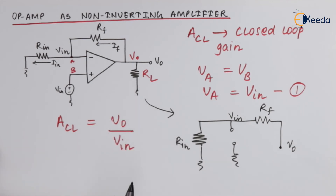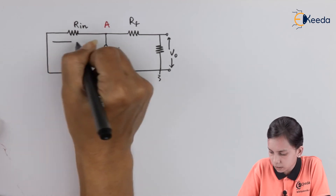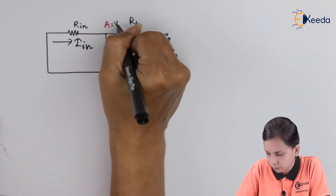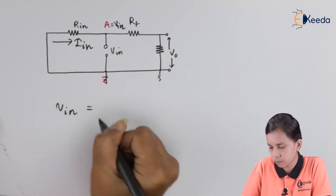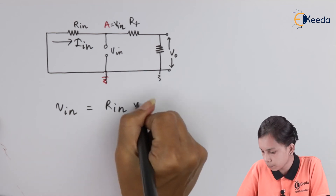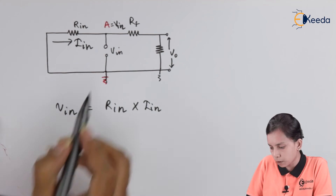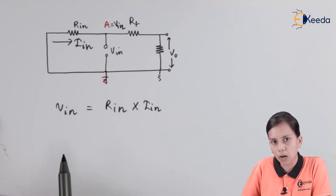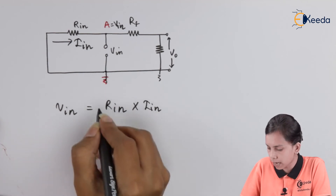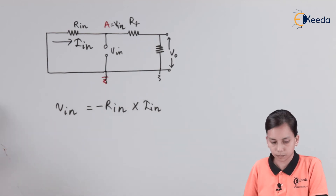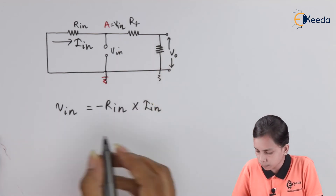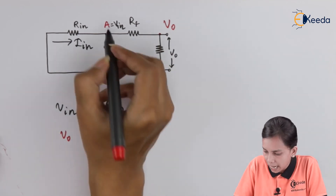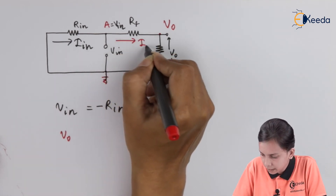Let's define the current through R_input as I_input. Since the other end is at ground (zero volts), V_input equals R_input multiplied by I_input. Because current is flowing from low to high potential, we apply a minus sign, so V_input equals minus R_input times I_input. Similarly, the current through R_F is I_F.